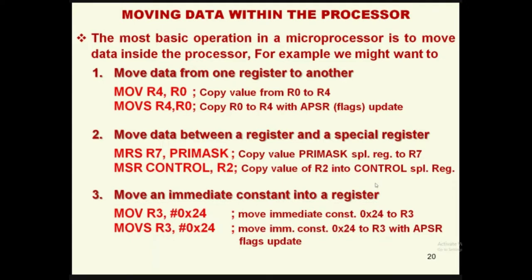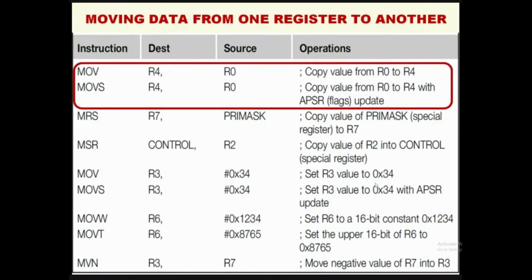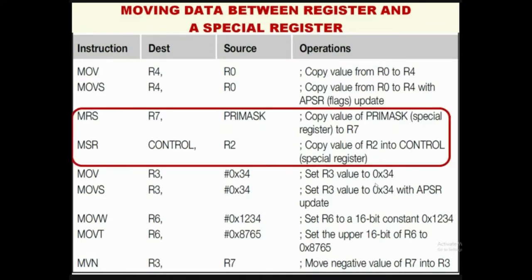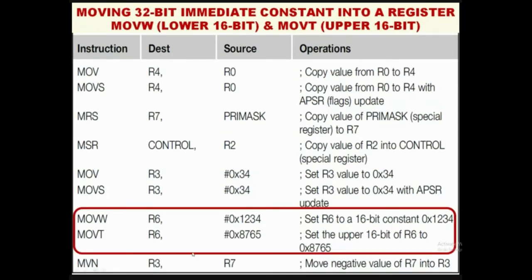The suffix S denotes that status flags need to be updated in the APSR. So MOVS moves the immediate constant 24 to R3 while updating the APSR status flag. MOV and MOVS move data between registers, with the S suffix updating status flags. Moving data between a register and a special register uses MRS and MSR. Immediate constants can also be stored into registers, with status register updated similarly using MOVS.